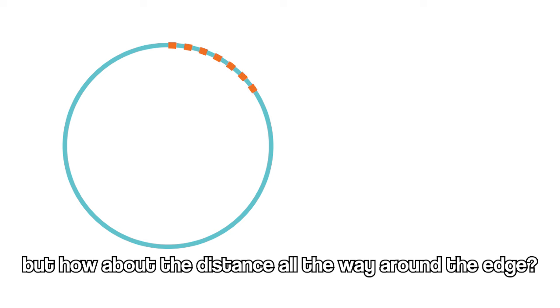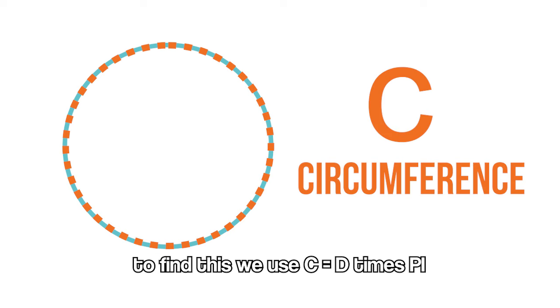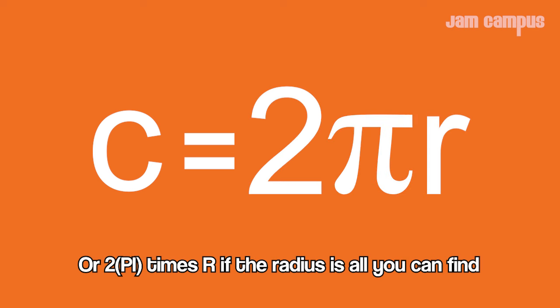But how about the distance all the way around the edge? Here we use the letter C and call this one the circumference. To define this, we use C equals D times pi, or 2 pi times r if the radius is all you can find.